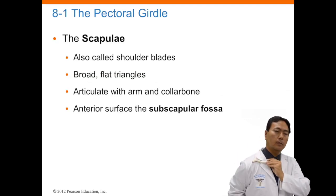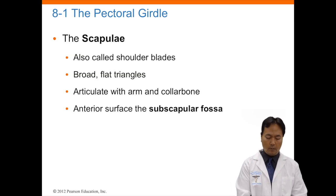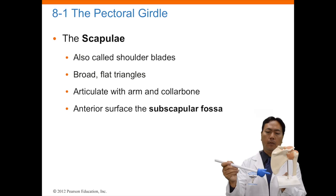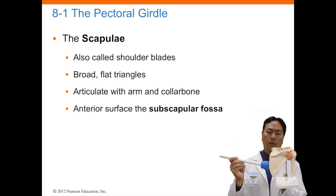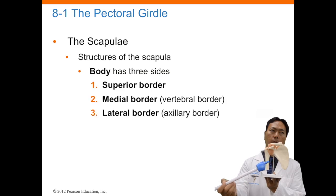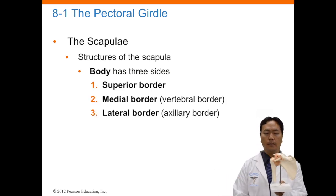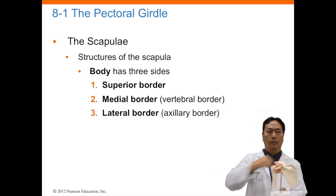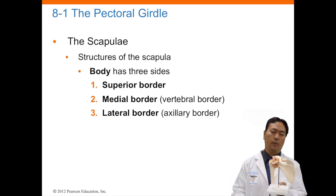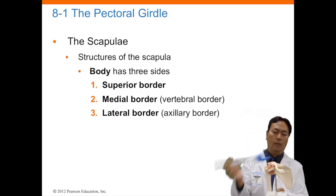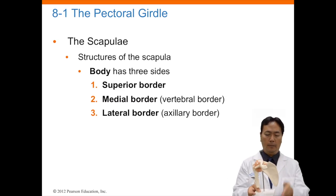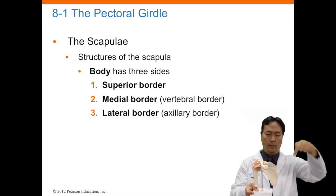The scapula, known as the shoulder blade, is a broad, flat triangular bone — also classified as a flat bone. It moves with the arm and the collarbone and is responsible for movement above and below horizontal as well as transverse movements. The scapula has three borders: the superior border at the top, the medial border toward the heart, and the lateral border on the outside.